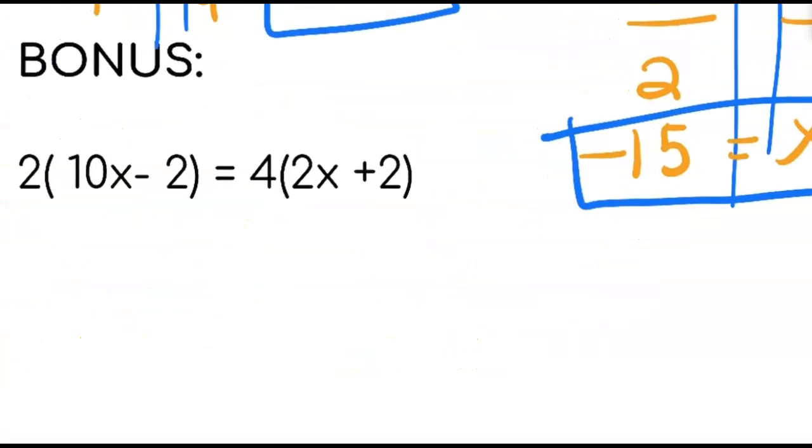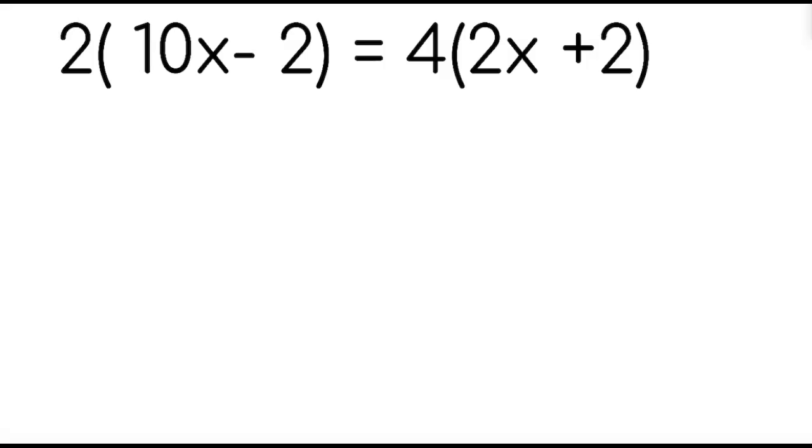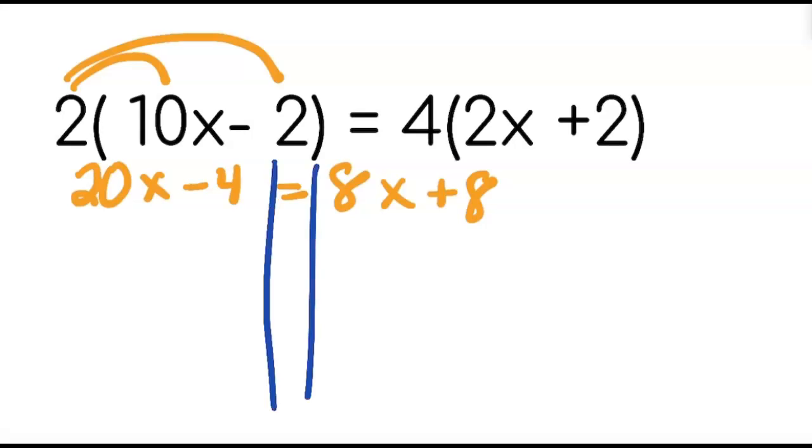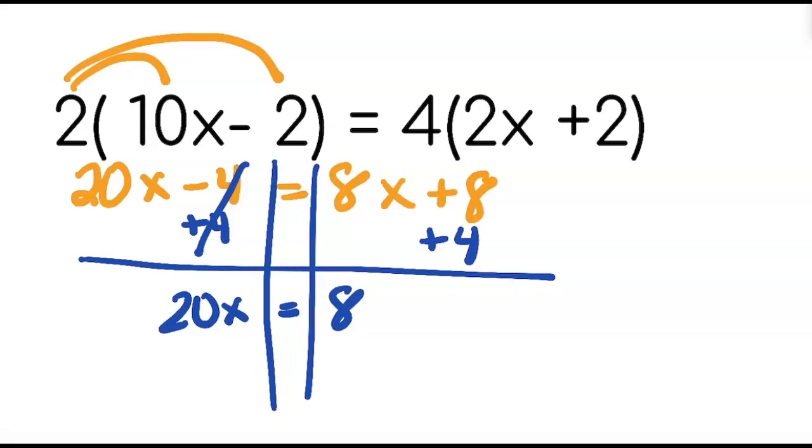If you'd like to continue listening, we can do this one together. You're going to need to use distributive property first. You're going to get 20x minus 4 equals 8x plus 8. So again, you need to decide which numbers you want to move which way. So first I'm going to draw my railroad tracks. And here I'm going to add 4 to both sides. So that cancels out. I'm left with 20x equals 8x plus 12.